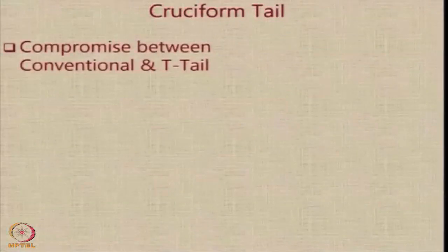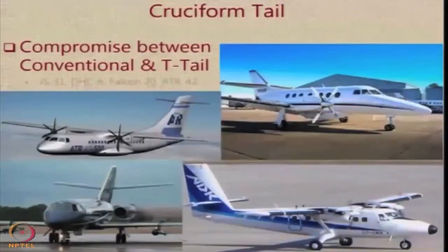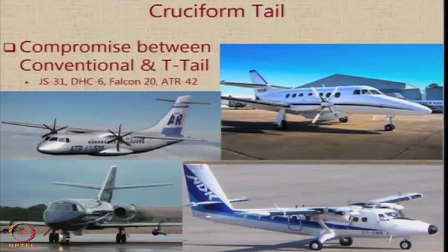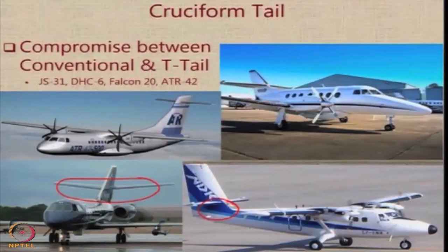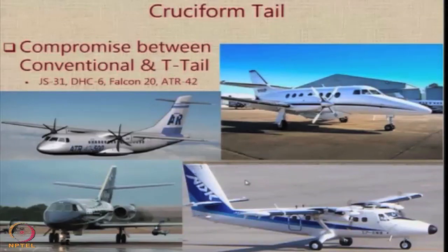The cruciform tail is a compromise between a conventional tail and the T-tail. The horizontal tail is not as high as a T-tail, but it is also not exactly at the junction of the fuselage and the vertical tail — it is a little bit up. This configuration is generally arrived at keeping in mind the angle at which the aircraft would normally be flying in trimmed flight. During that condition, the horizontal tail is kept away from the wake. And at very high angles of attack, the tail would again be out of the wake of the wing.